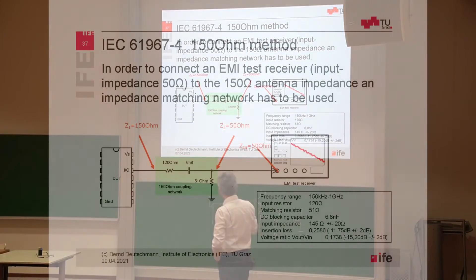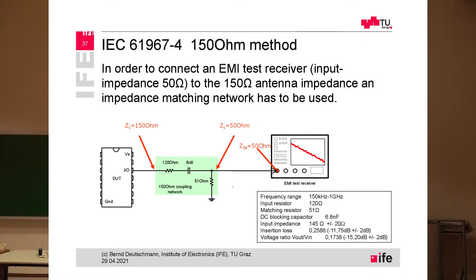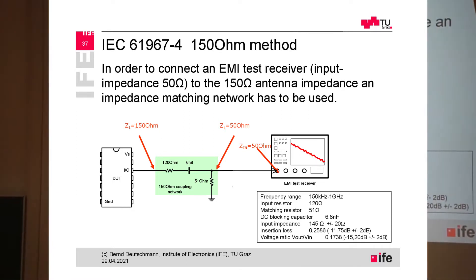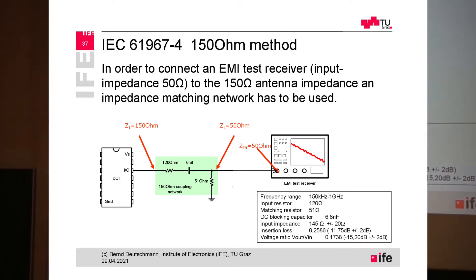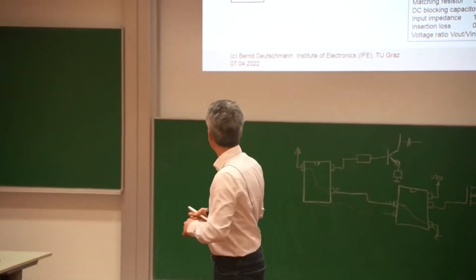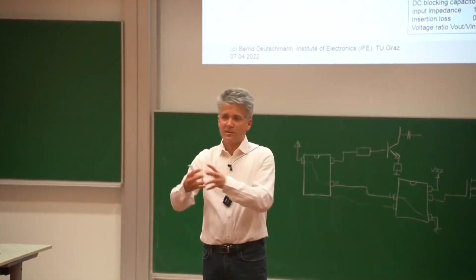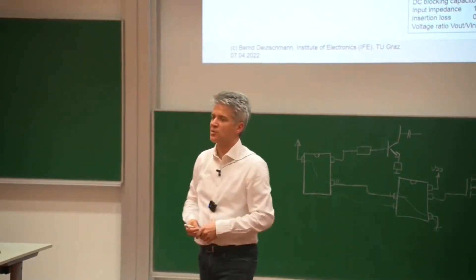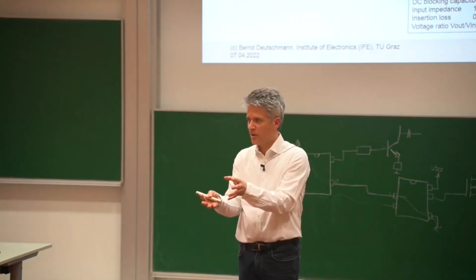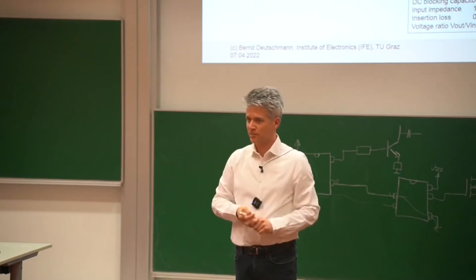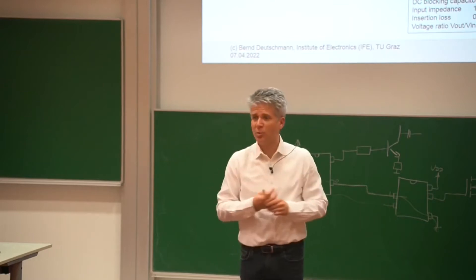To overcome this problem, a very simple and elegant network was defined, consisting of just two resistors and one capacitor — three SMD components that can be placed very close to the IC pin in a very reproducible way. The task is to understand why this is called the 150-ohm measurement technique: the total antenna impedance is somehow 150 ohm, and the IC should see 150 ohm whether it looks into the cable harness or into this coupling network.